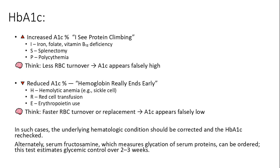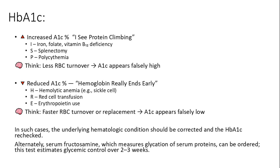HbA1c levels can be misleading due to conditions affecting red blood cell turnover. Increased A1c might occur in deficiencies like iron or vitamin B12, while reduced A1c could result from high turnover states like hemolytic anemia, erythropoietin use, or recent blood transfusion. In such cases, serum fructosamine tests can provide a more accurate glycemic control estimate over 2–3 weeks.